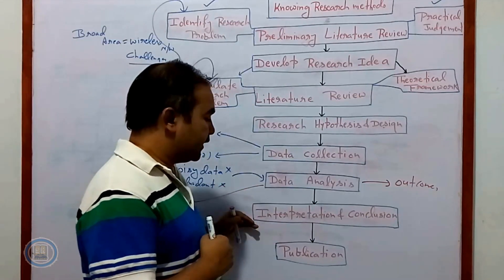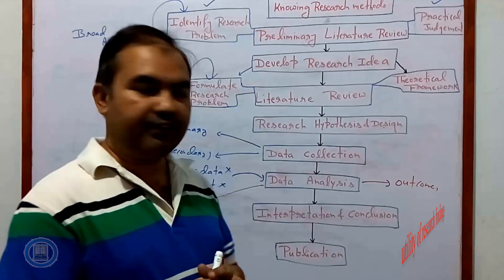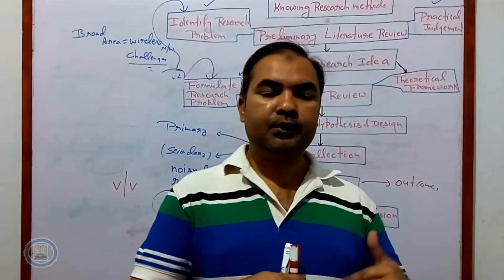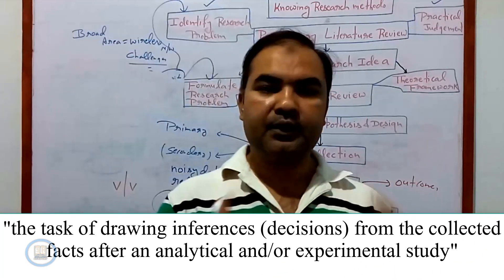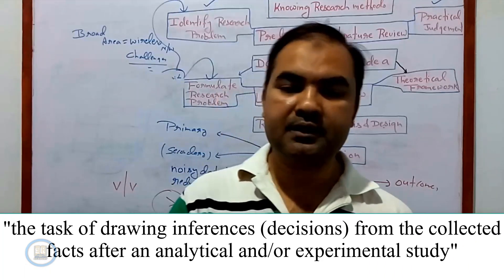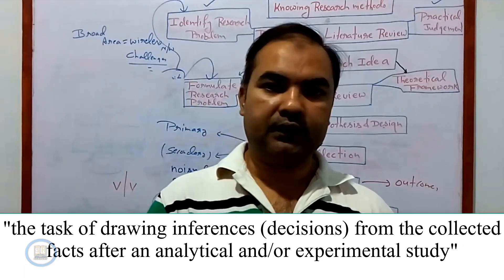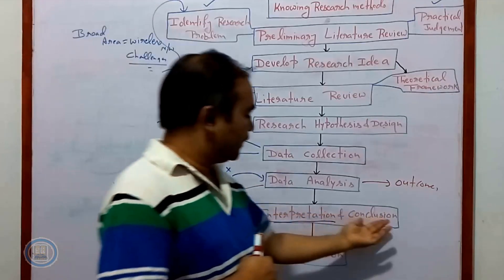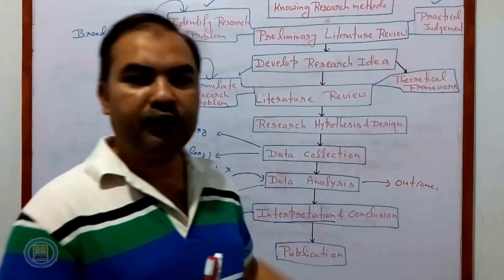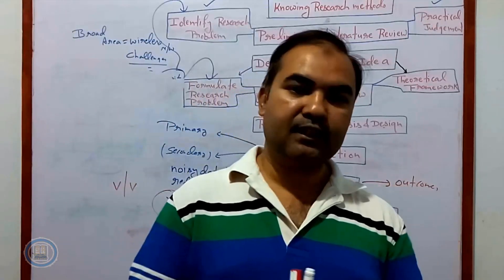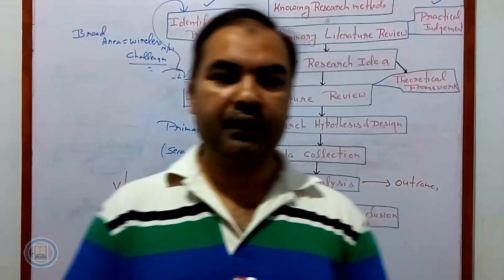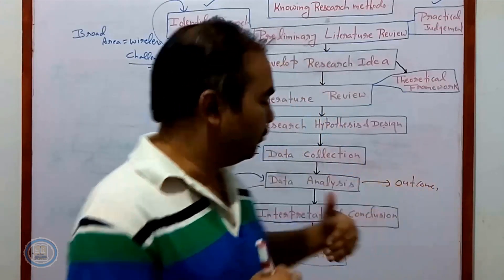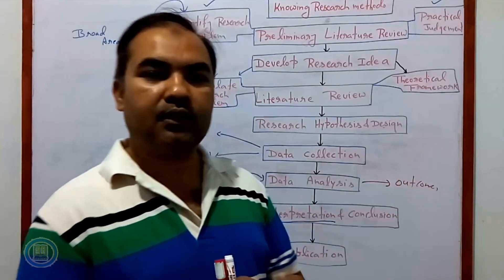The next phase is interpretation and conclusion. Interpretation means identifying the dimensions and applicability of your data. Even if you conducted very good research, if you did not relate your data with applications or different dimensions, future researchers will not cite your research. You need to show where your research data is applicable — all possible utilizations. Conclusion means summarizing the new facts generated from your investigation. You can also give future recommendations, which provide direction for new researchers and indicate the limitations of your research.